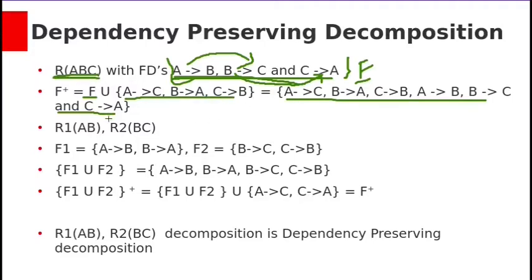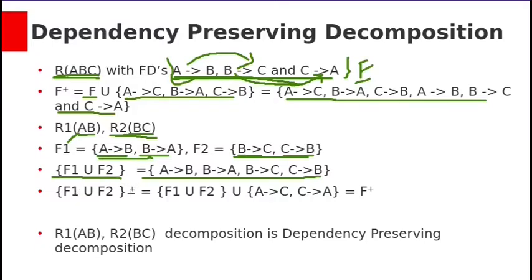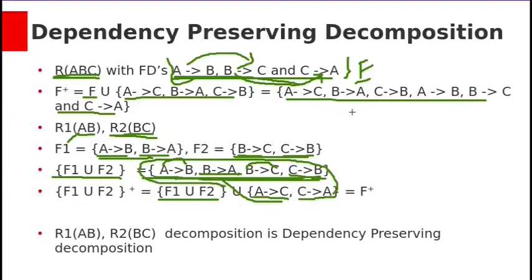Suppose we decompose relation R into two sub-relations: R1 with attributes A, B and R2 with attributes B, C. The functional dependencies of R1 are A → B and B → A, and for R2 we have B → C and C → B. Taking the union F1 ∪ F2 gives these four functional dependencies. From these four we can infer A → C (via A → B → C) and C → A (via C → B → A). Combining all, the closure of F1 ∪ F2 equals the closure of F.